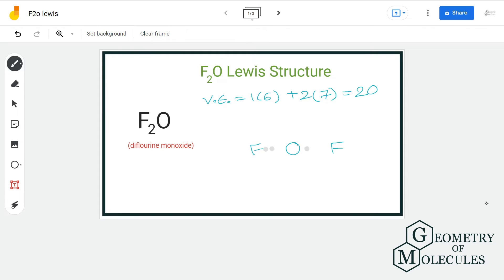Then we will place electron pairs in between each atom for bond formation. As you can see here, each fluorine atom needs six more electrons for complete octet, so let us go ahead and assign six electrons to each fluorine atom.